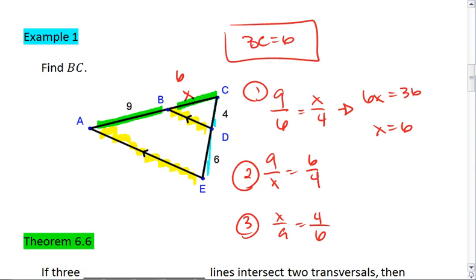Aside from using proportions, you could have also realized that going from 6 to 4 is multiplying by 2 thirds. So to go from 9 to X, we want to multiply by 2 thirds, which gives us 6. That's using a scale factor or scaling.